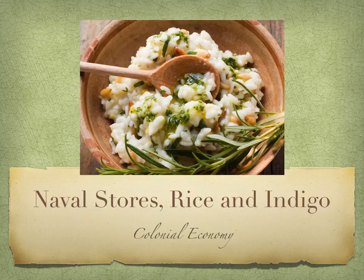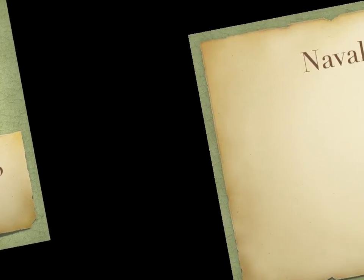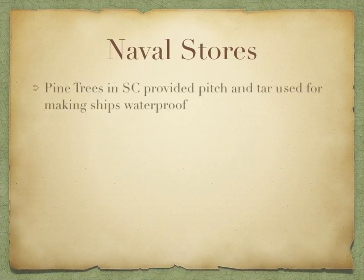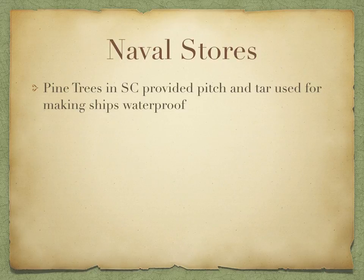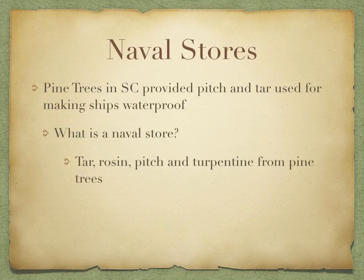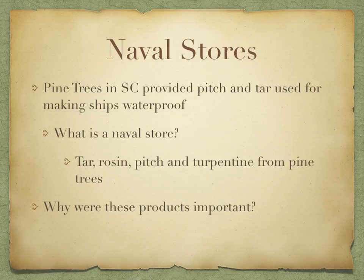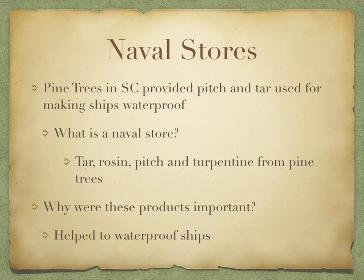Up next, naval stores, rice, and indigo — another part of the colonial economy. Pine trees in South Carolina provided pitch, tar, rosin, and turpentine used for making British Navy ships waterproof. Tar is very sticky, so they would put it all over the ships to make sure they were waterproof. These products were important because they helped to waterproof the ships, and the pine trees provided the raw material for all of that.